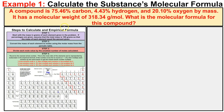A compound is 75.46% carbon, 4.43% hydrogen, and 20.10% oxygen by mass. It has a molecular weight of 318.34 grams per mole. What is the molecular formula for this compound? When we're given a question like this, the first thing we need to do is determine what the empirical formula for this compound is going to be, using the four steps for calculating the empirical formula.